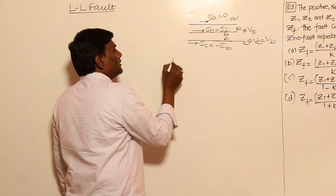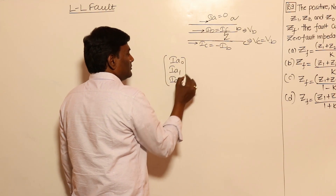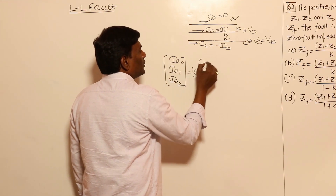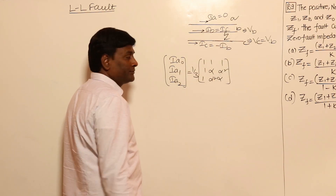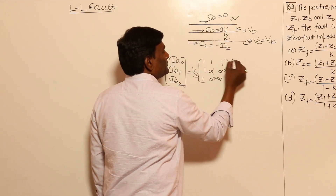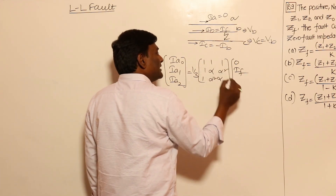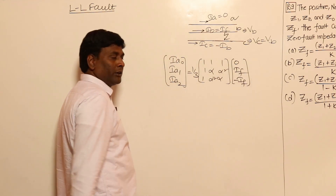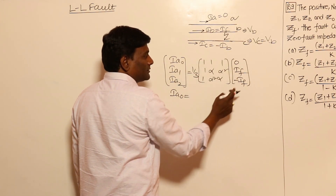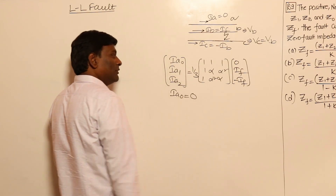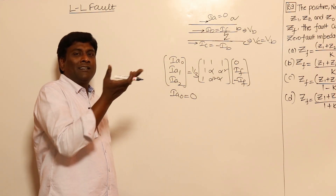So let us start our analysis. IA0, IA1, IA2 equal to one-third of the symmetrical components matrix — which we already discussed — into IA (zero), IB (fault current IF), and IC (minus IF). Now IA0 equals zero because the sum of IA, IB, IC is zero. As discussed in the previous session, whenever ground is not involved, zero sequence currents cannot flow because there is no return path.